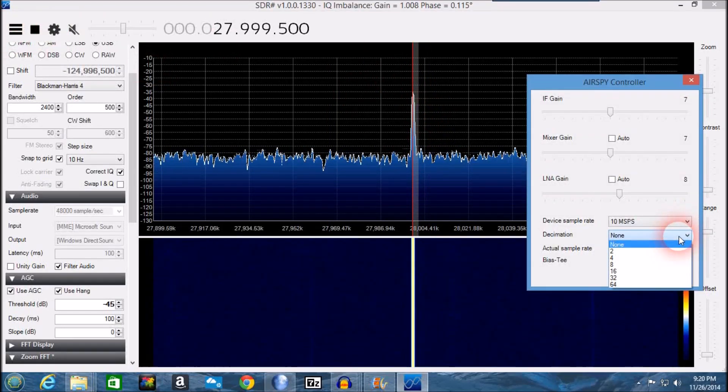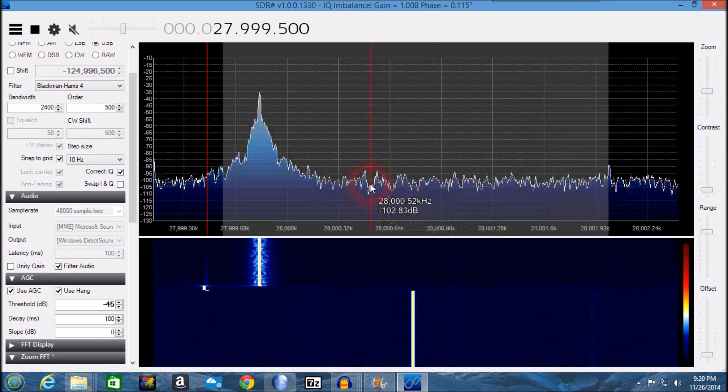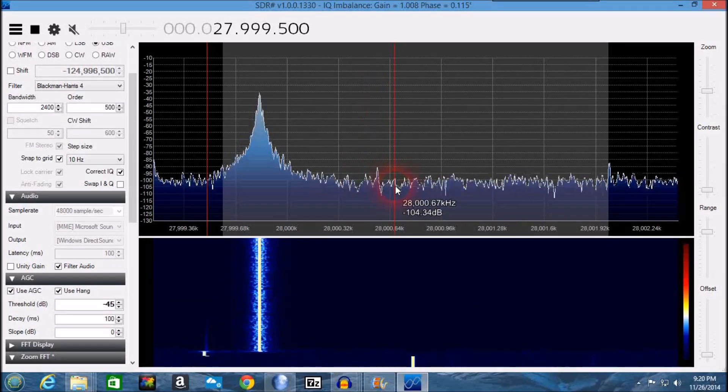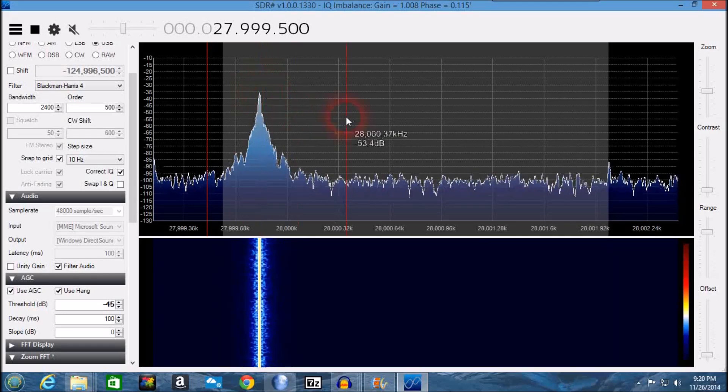So I'm now going to increase decimation to times 64 and as you can see, the noise level has dropped to an average of 100 dB and the peak is still where it was at minus 34 dB.